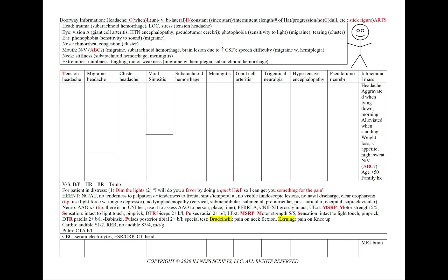Finally, in an intracranial mass, we'll have a headache aggravated when lying down or in the morning and alleviated when standing. Classic findings for cancer include weight loss, decreased appetite, or night sweats. We could also have vomiting, using A, B, and C. Our patient will tend to be older — greater than 50 years old — and with a positive family history. We'll add an MRI of the brain.